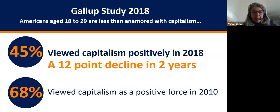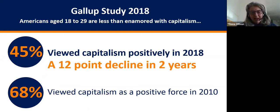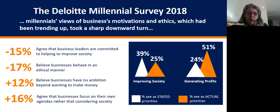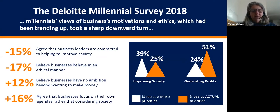By way of context, we know that capitalism is not exactly doing well right now. Americans aged 18 to 29 are viewing capitalism less and less positively — a 12-point decline in just the last two years — so less than 50 percent of this age group now think capitalism is a positive force in the world. A similar Deloitte Millennial Survey is also showing this trend: people are becoming less and less convinced that businesses and corporate leaders are really working for the good of society.